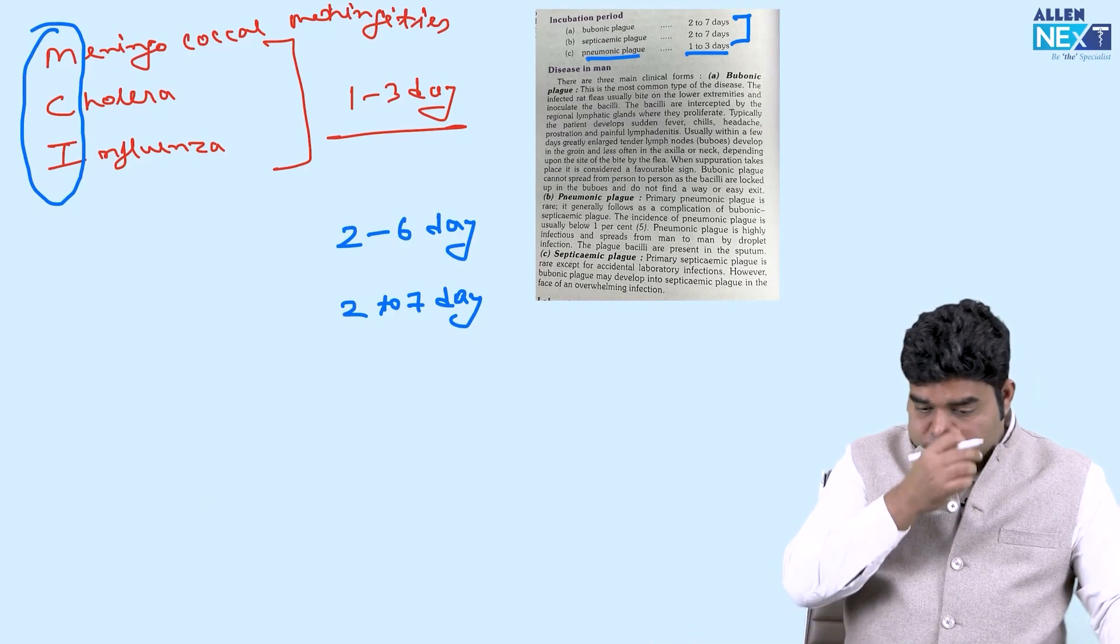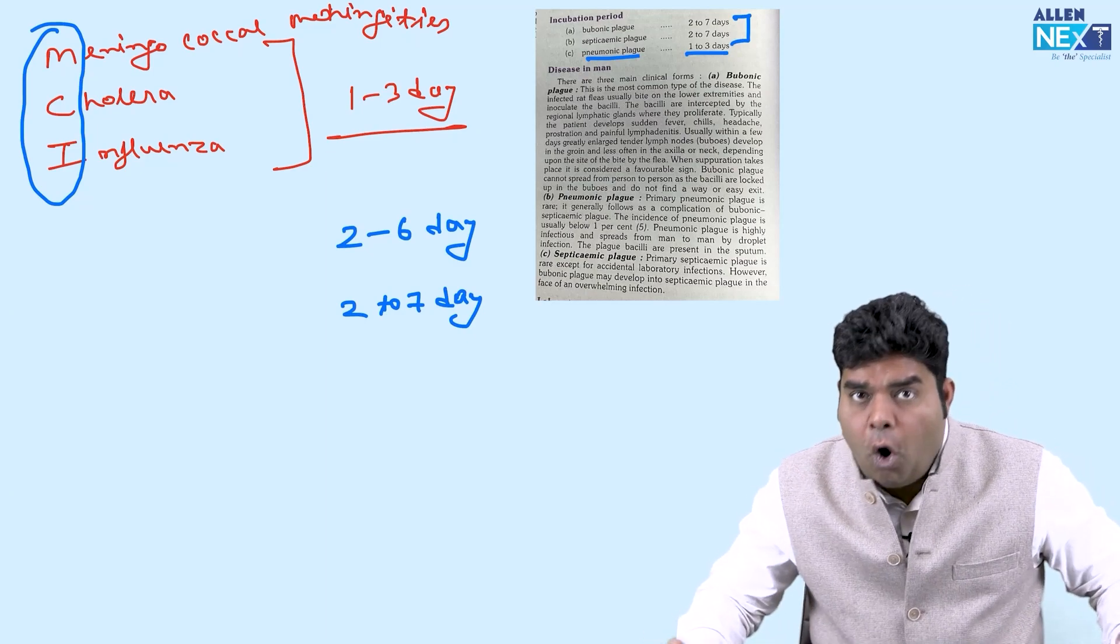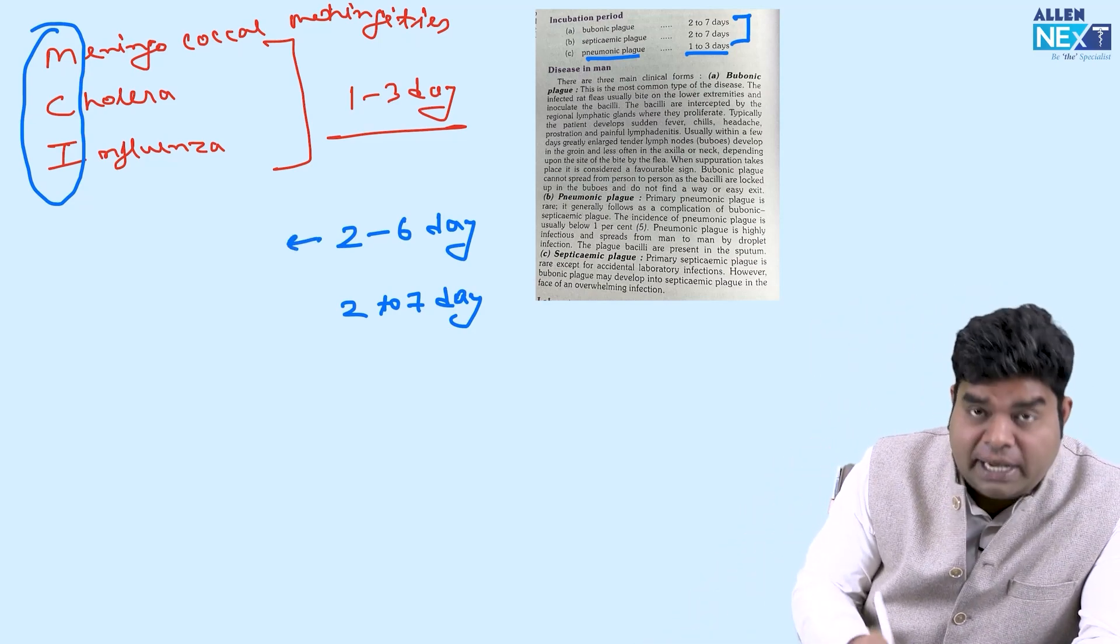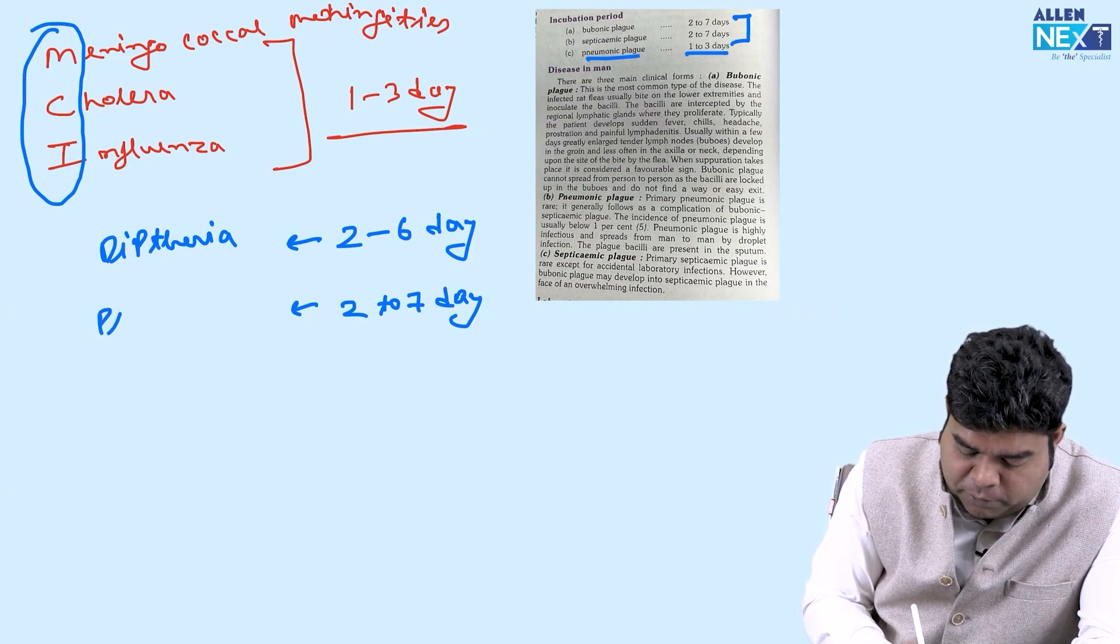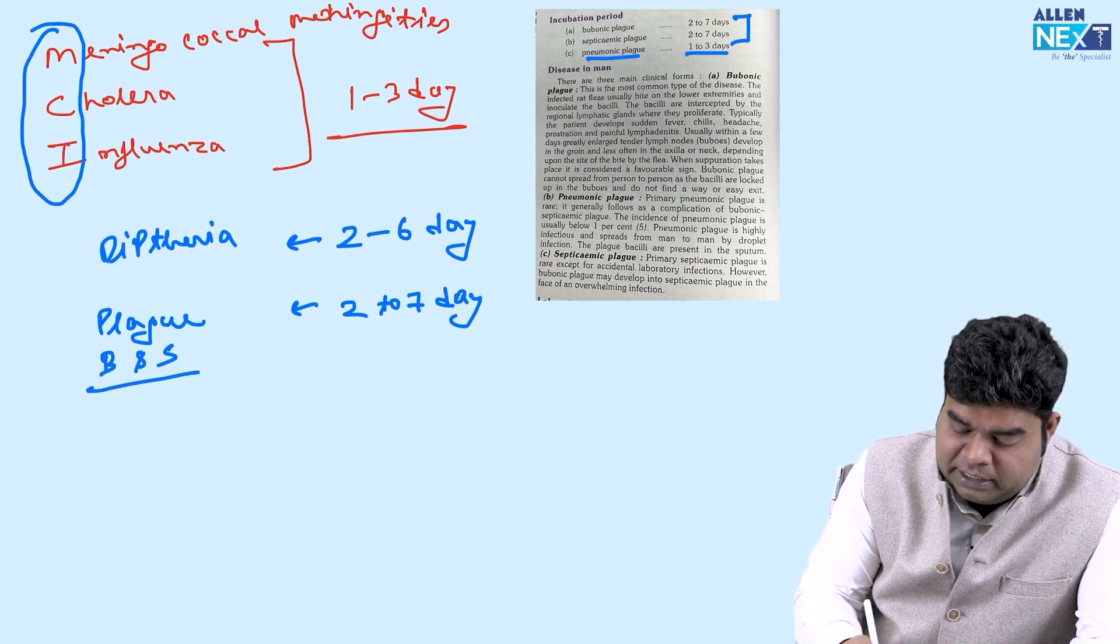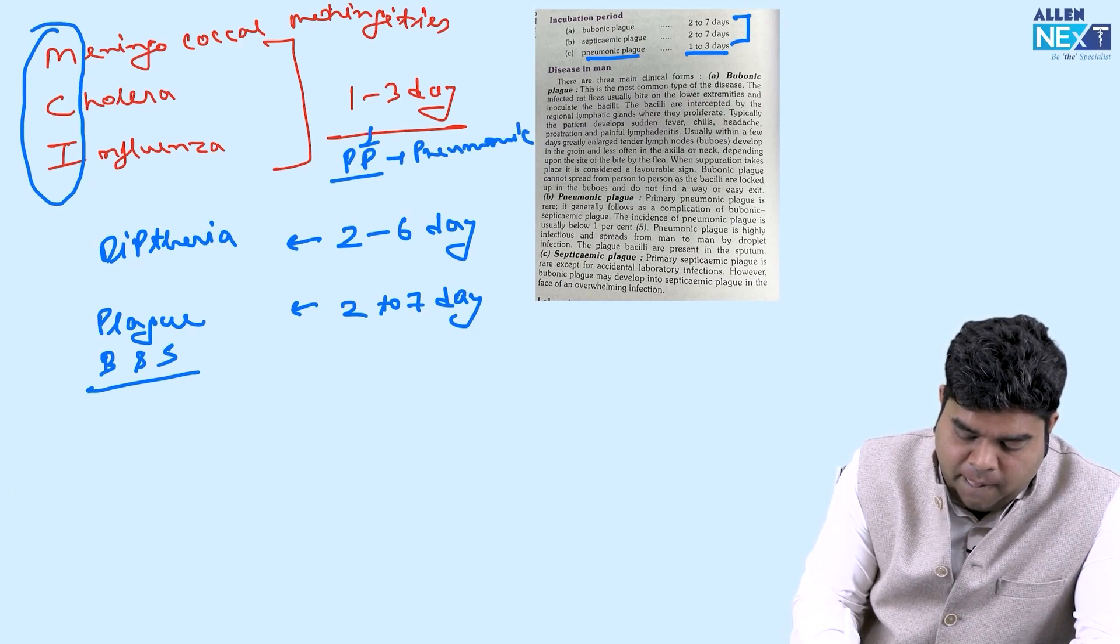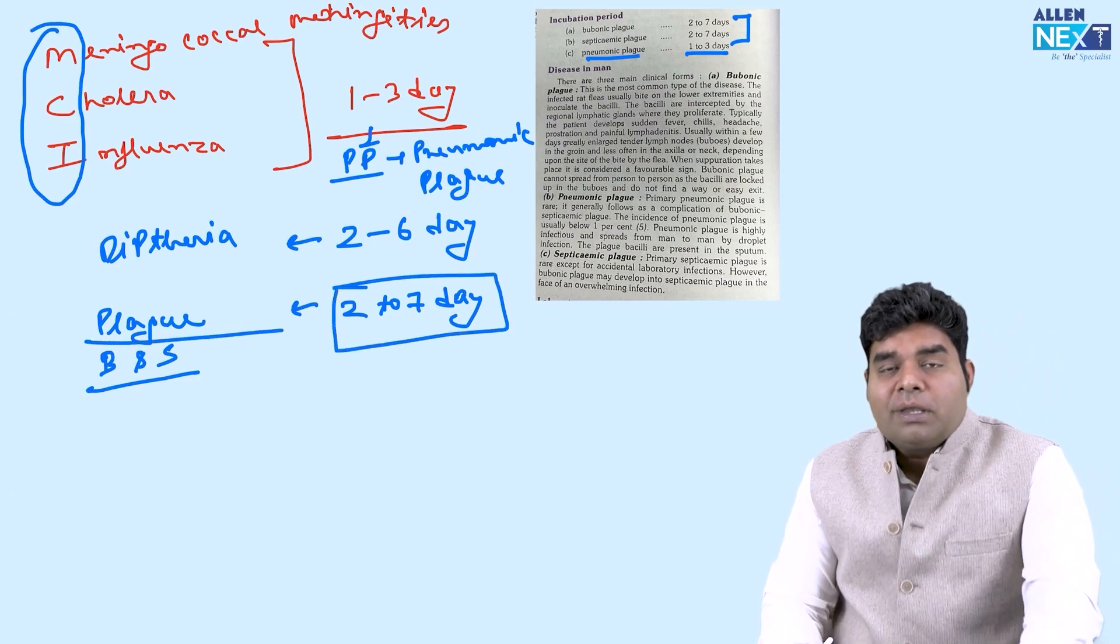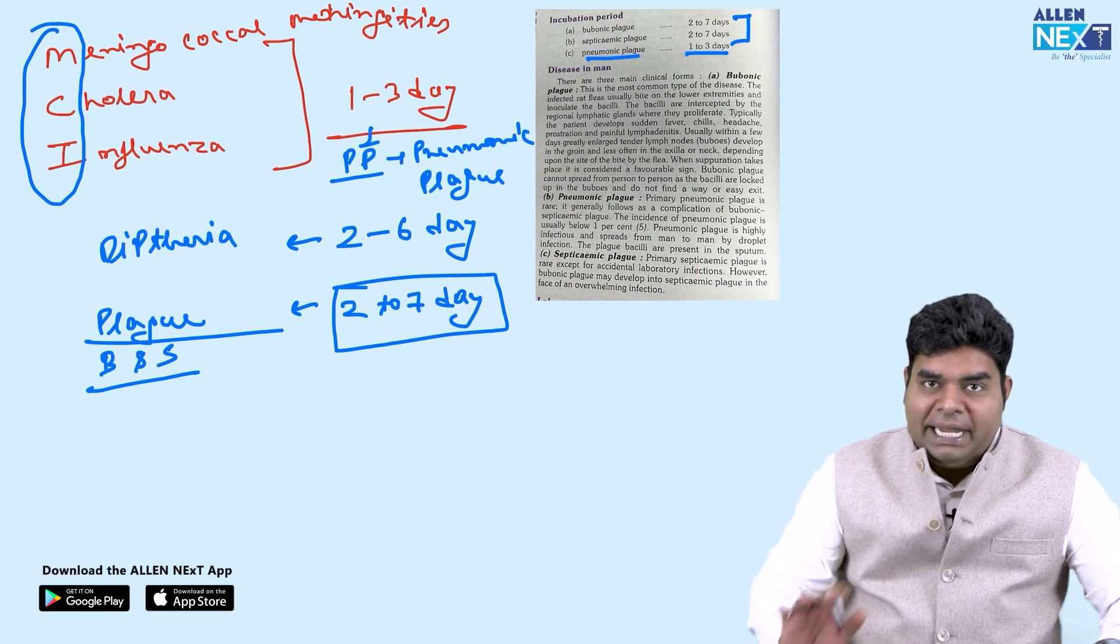For pneumonic plague the incubation period is 1 to 3 days and then it goes all over the body, that is known as septicemic plague, for that the incubation period is again 2 to 7 days. One really good teacher has explained the incubation period as 40 days, it was wrong and it is 2 to 7 days, it is Park latest edition 2 to 7 days is there. 2 to 6 days was for diphtheria, then 2 to 7 days is for bubonic plague and septicemic plague. 1 to 3 days is for pneumonic plague, but if they ask only plague it is better to write 2 to 7 for plague.